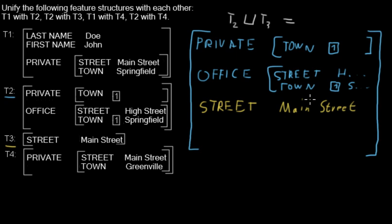So this is the unification of T2 and T3. We have no properties in T3 that we need to add, and this street is another new property on the same level as private and office, and it's not a property of those inner feature structures.